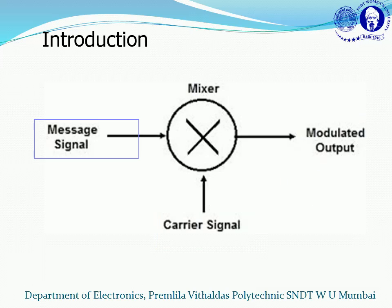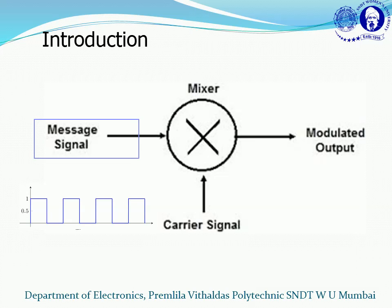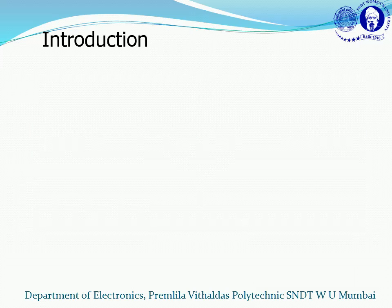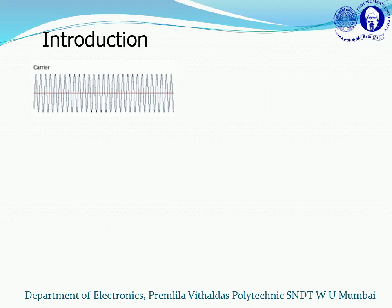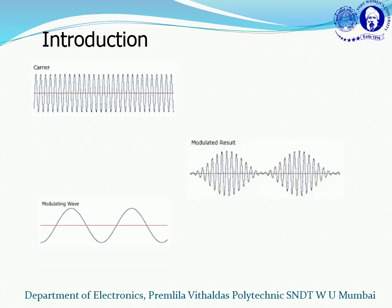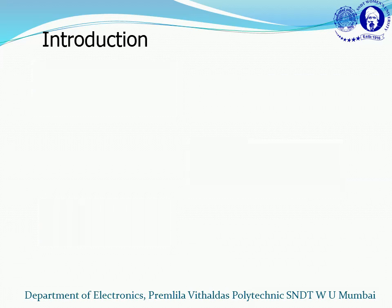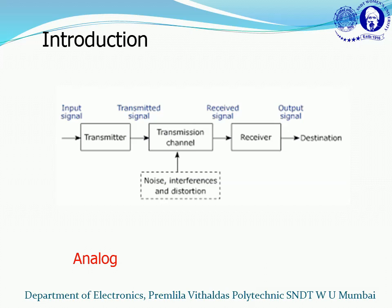The information similarly can be either analog or digital. Any one parameter of a carrier is varied in accordance with a message, and then it is transmitted over a channel. The channel could be analog or it could be a digital channel.